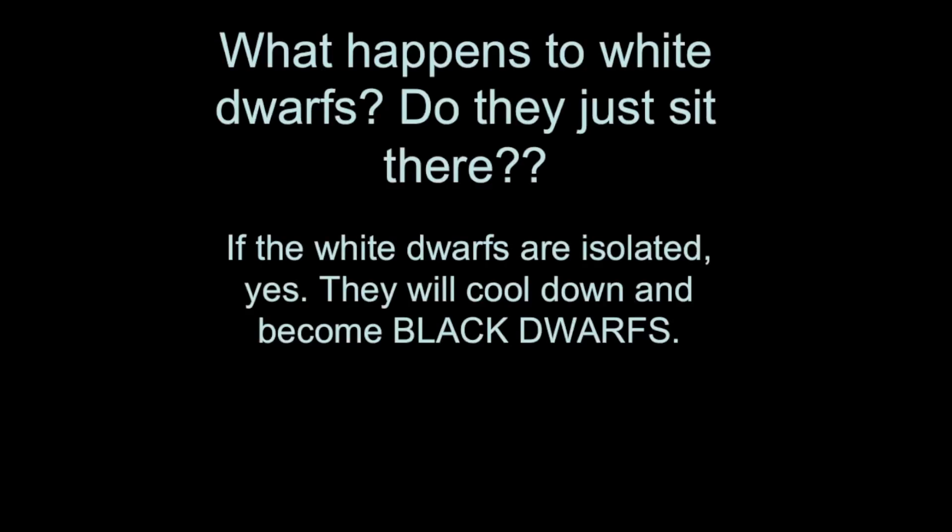That is the life of a low mass star: from interstellar cloud to main sequence star, to red giant, to planetary nebula, leaving behind a white dwarf. If the white dwarf is isolated, it will simply radiate away its heat over a very long period of time and become what's called a black dwarf.